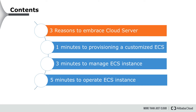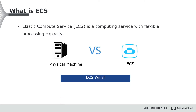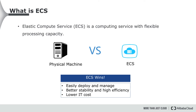First, let's talk about the three reasons to embrace cloud server. What is ECS? ECS is a key product of Alibaba Cloud. ECS is a computing service with flexible processing capacity. Compared to a physical server, ECS can easily deploy and manage applications with better stability and high efficiency. Its flexibility can also lower overall IT cost and enable you to focus on key business innovations.